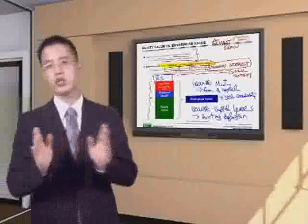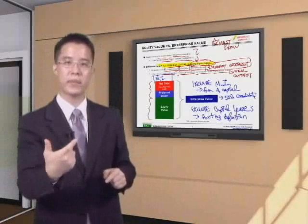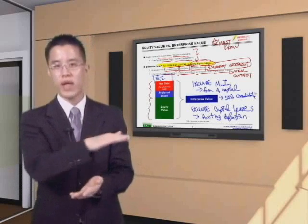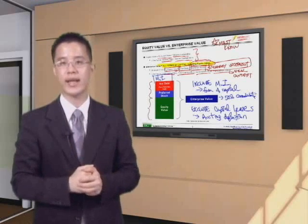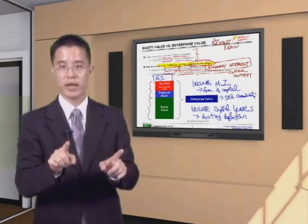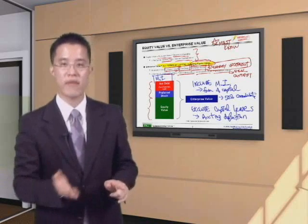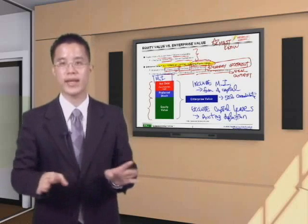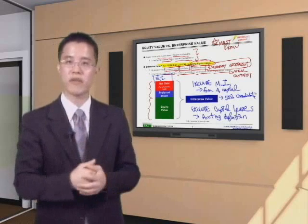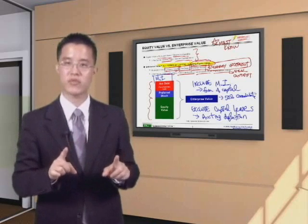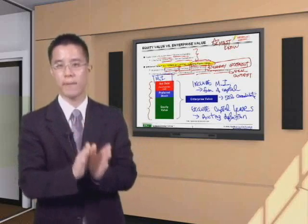Please make sure you solidly understand this concept of enterprise value, because whenever we value companies we always want to value the enterprise value first, then subtract net debt, minority interest, and preferred stock to get down to equity value. From equity value divided by the appropriate number of shares outstanding, we get price per share. We rarely want to go the other way up when valuing a standalone company. Enterprise value represents the entire firm — the entire enterprise — which is what I'm acquiring, not just the equity component.